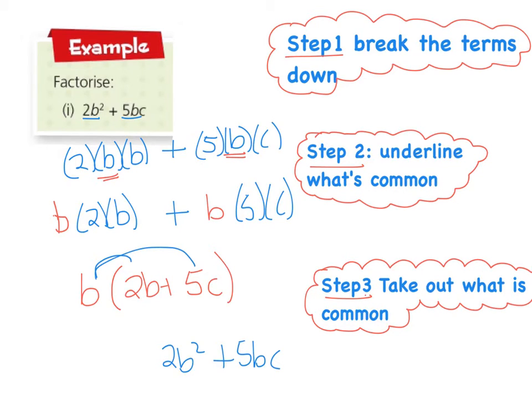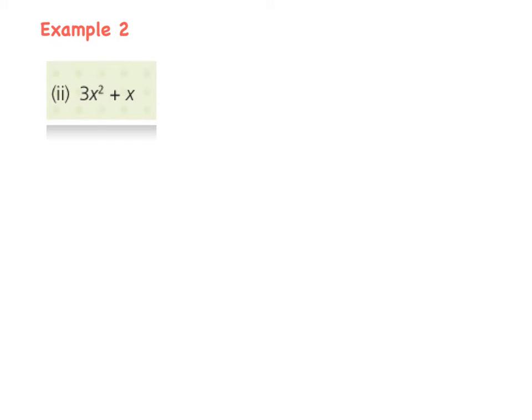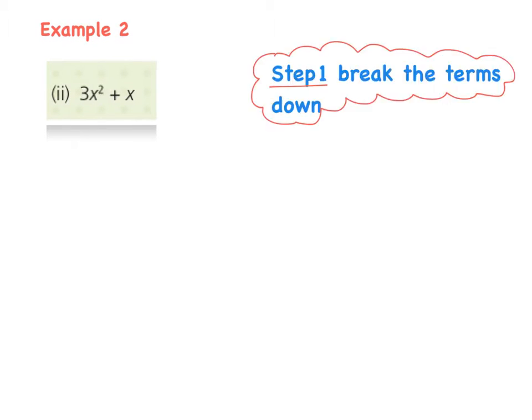Okay, let's have another look at the next example. Okay, this example here is example 2, and it is 3x squared plus x. So I'm going to write my three steps down here beside. So step 1, break down the terms, and it will be 3 times x times x. So that's the first one. And the second one is pretty easy, it's just one thing on its own. So it's 1 bracket x.